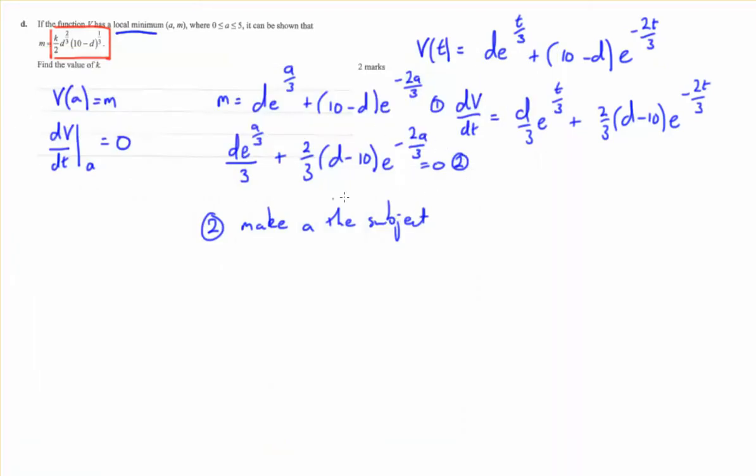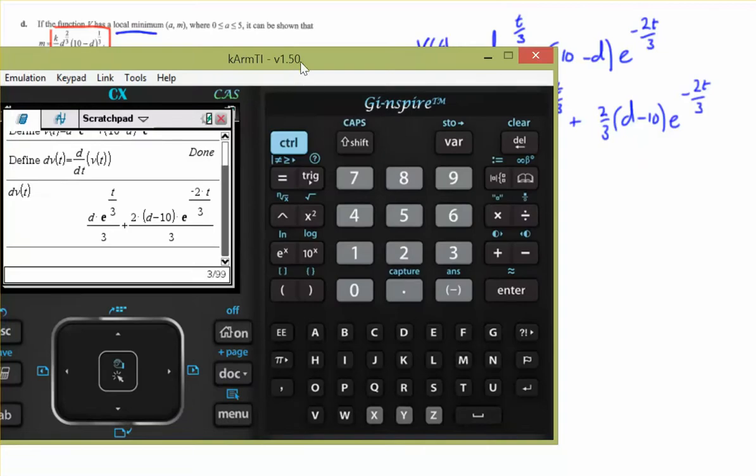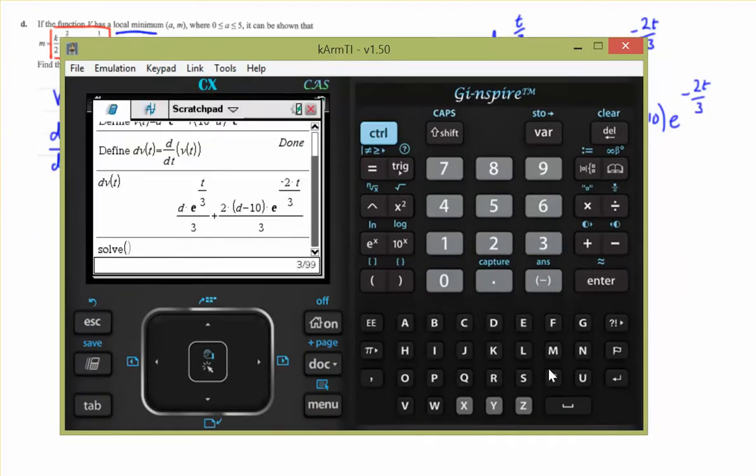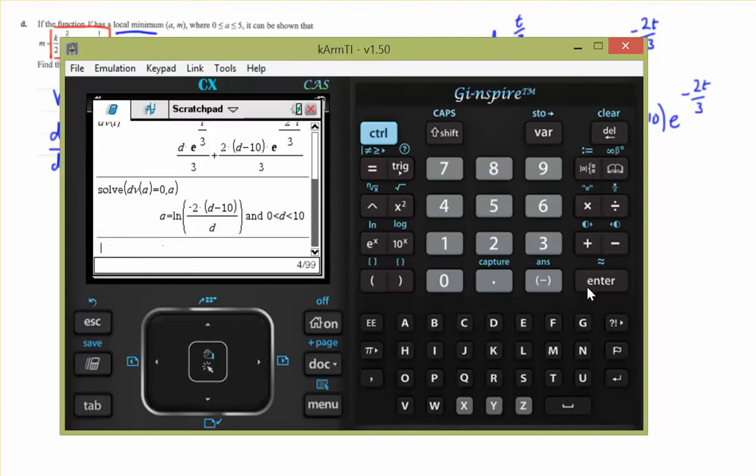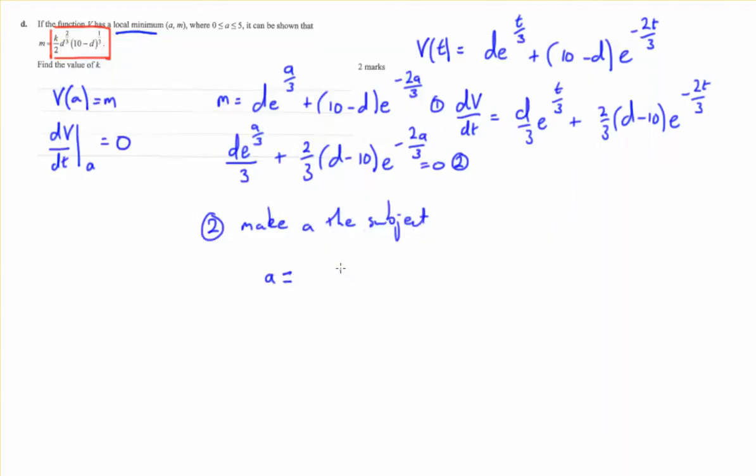Now what do we need to do? We need to take this derivative here and we need to equate it to 0 but make A the subject. We can do that on our CAS. So if we really want to solve for this derivative when we sub in A, we want it to equal 0 but we want the subject to be A. There we are. So we've got a value for A. A equals the natural log of negative 2 times D minus 10 on D.